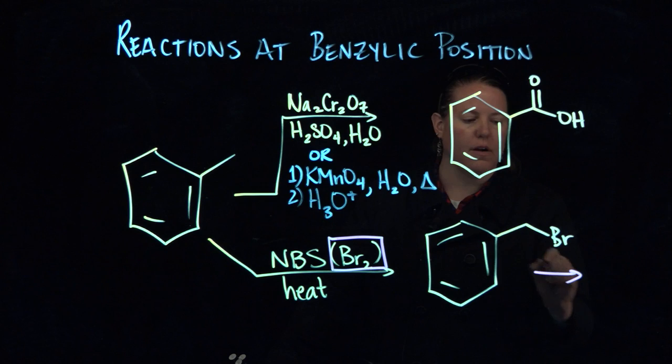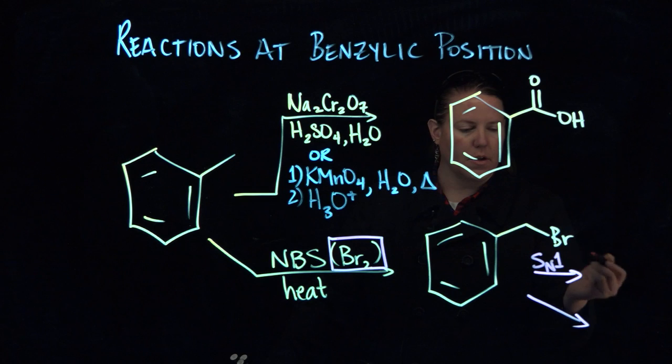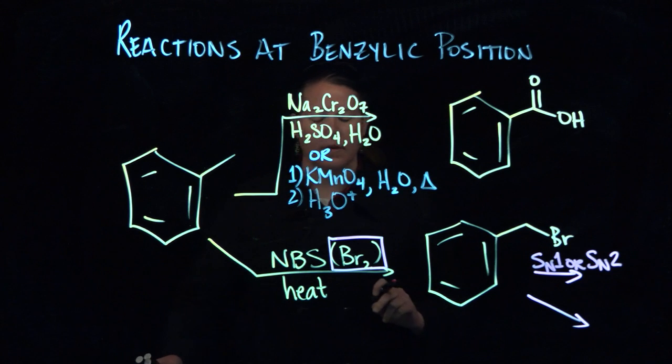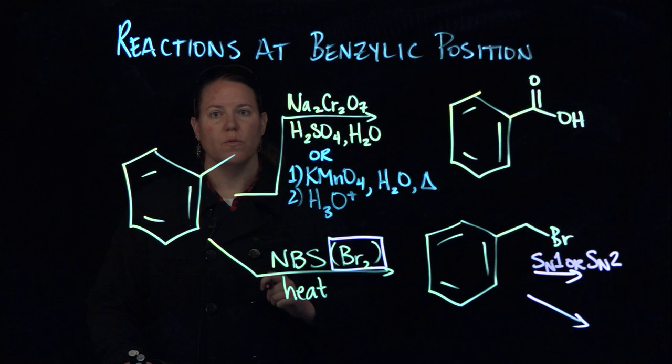When you put on Br, the world is open to you. You can do SN1 or SN2 reactions. In this case, because that carbon is a primary carbon, it would be SN2.